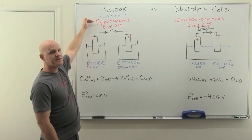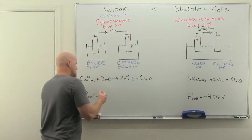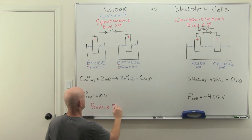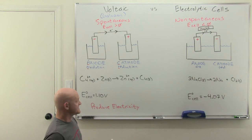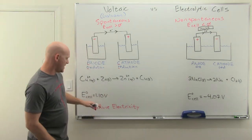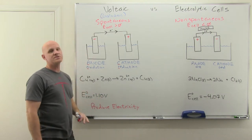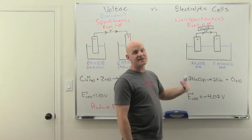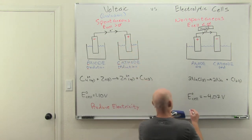Here we have a spontaneous reaction happening, which we can tell based on E-cell, and so voltaic cells produce electricity. Whereas the electrolytic cell has a non-spontaneous reaction that we're forcing to happen with a power source, and we're going to consume electricity instead.